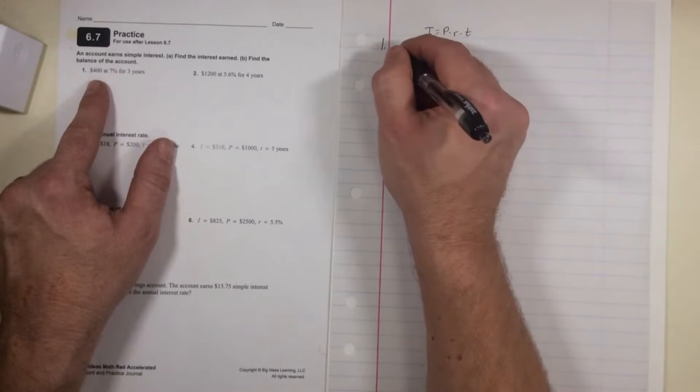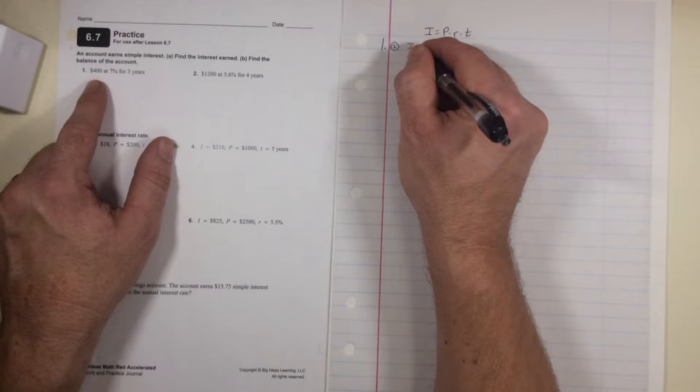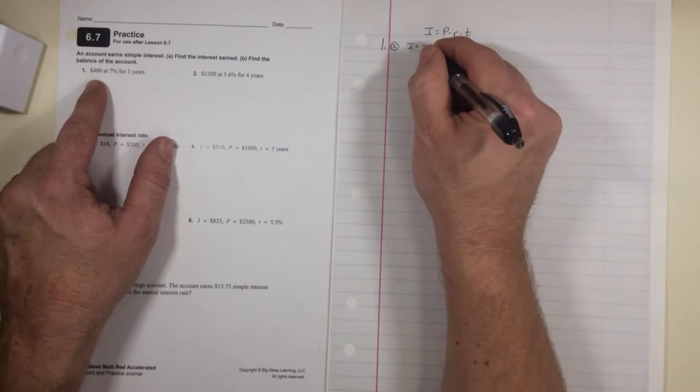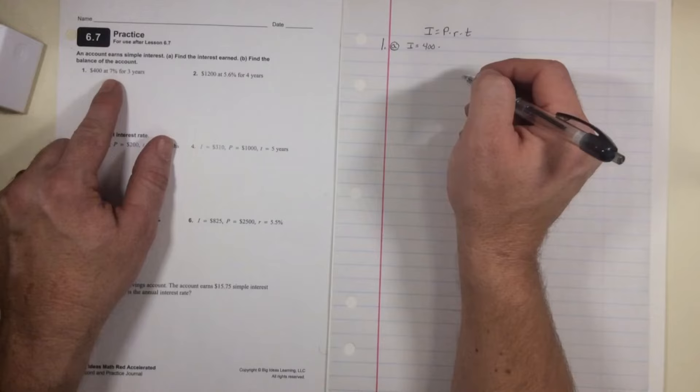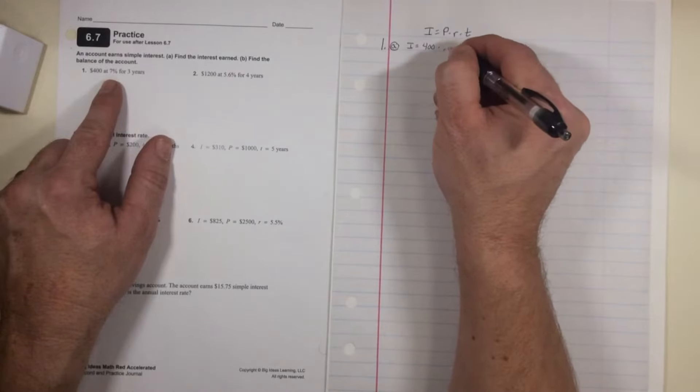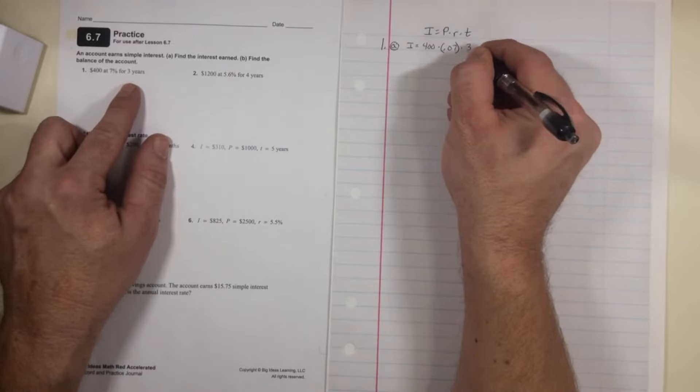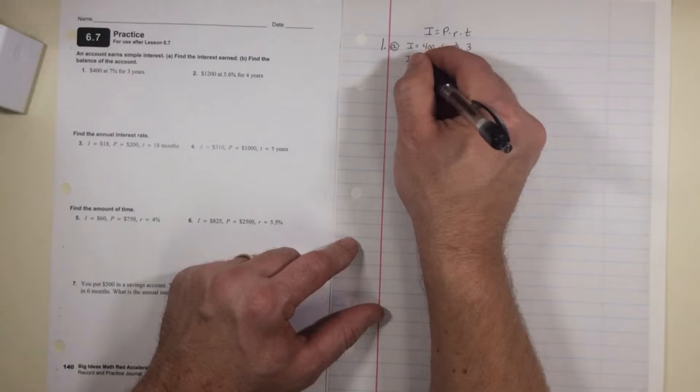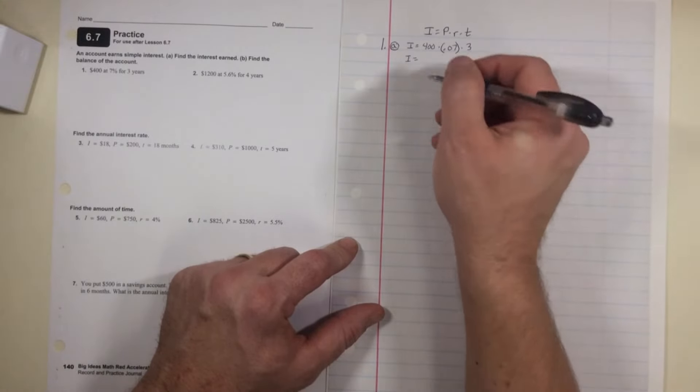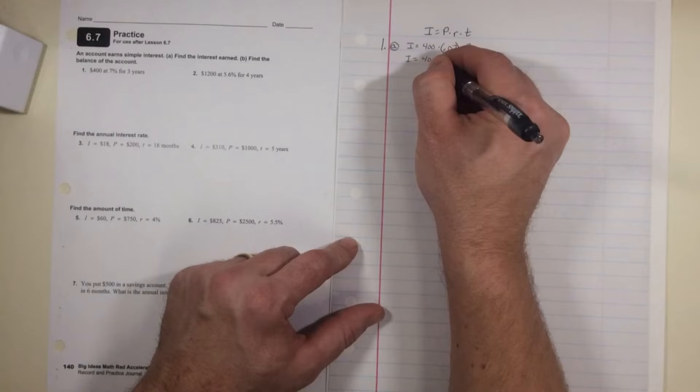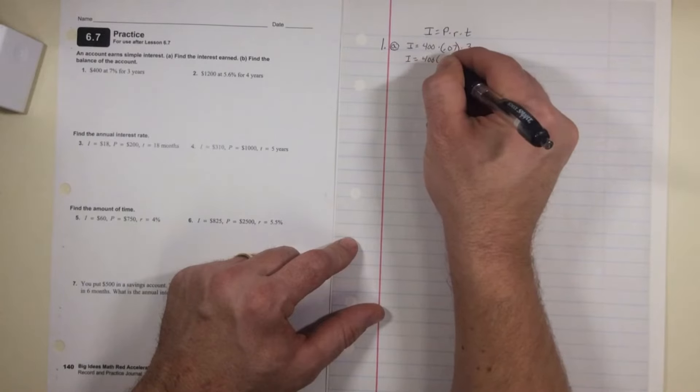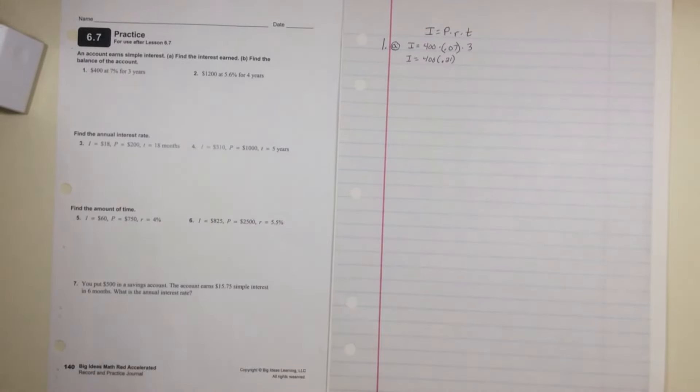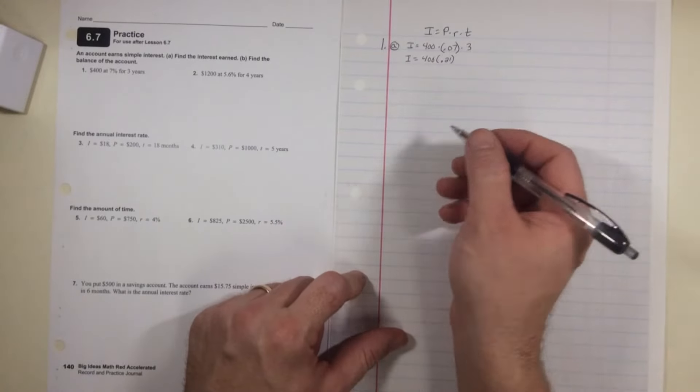So 1a, how much interest? Well, we're looking for the interest. They give us the principle of $400, the rate is 7% which is 0.07, and the time is 3 years. So we multiply 0.07 times 3, which would be 0.21, so I have 400 times 0.21, and 400 times 0.21 would be $84.